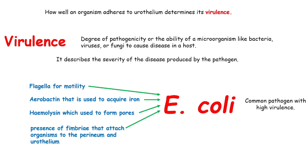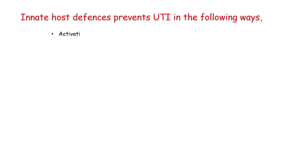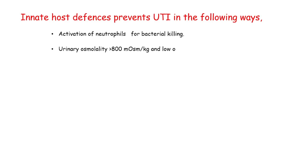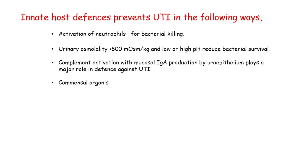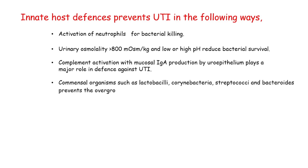Innate host defenses prevent UTI in the following ways: activation of neutrophils for bacterial killing; urinary osmolality and low or high pH reduce bacterial survival; complement activation with mucosal IgA production by uroepithelium plays a major role in defense against UTI. Commensal organisms such as lactobacilli, corynebacteria, streptococci, and bacteroides prevent the overgrowth of E. coli bacteria.